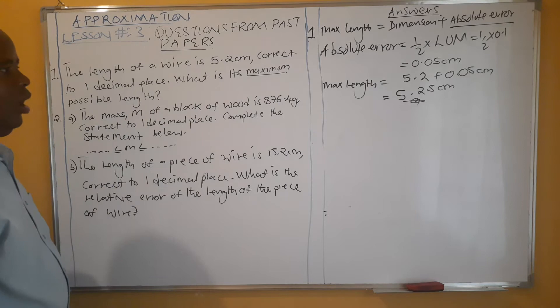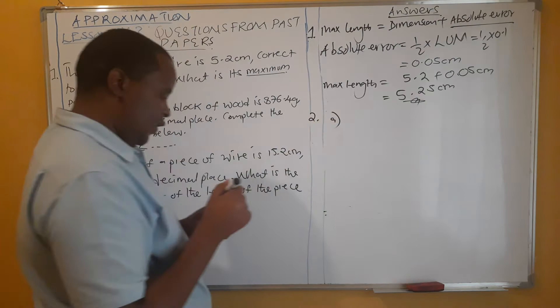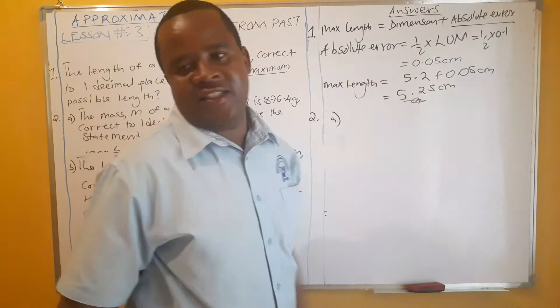That is our maximum possible length. If you are asked to get the minimum possible length, you are going to say 5.2 minus 0.05.